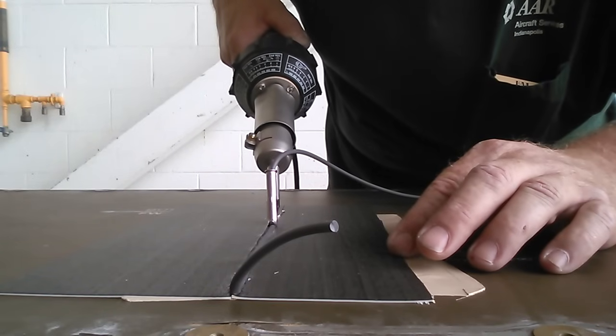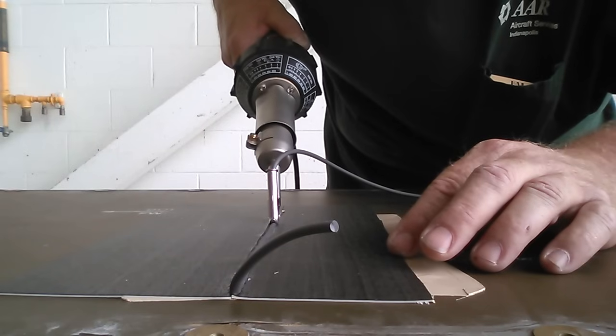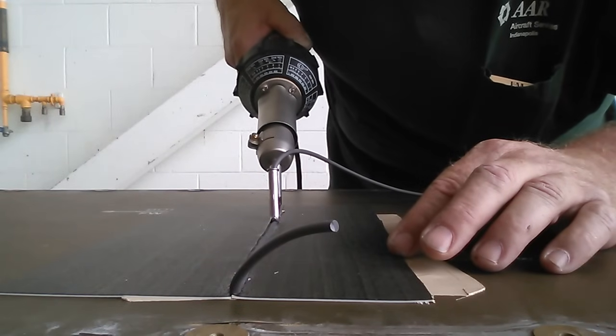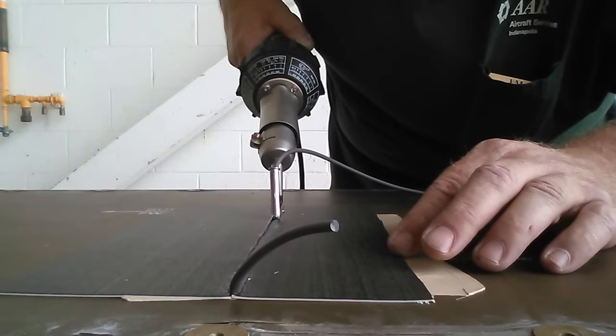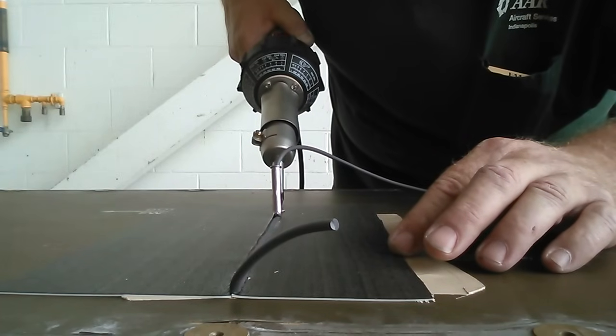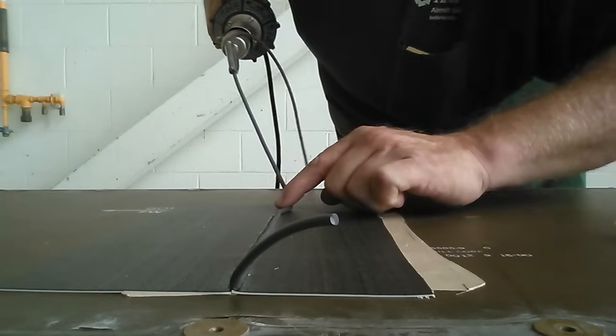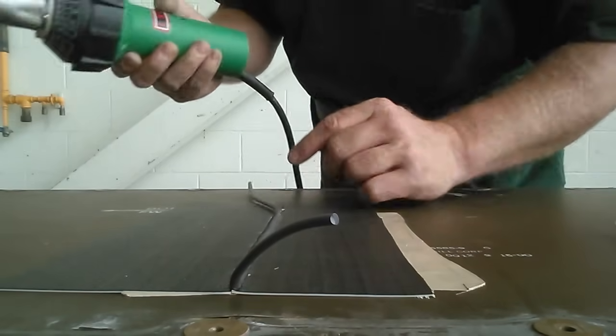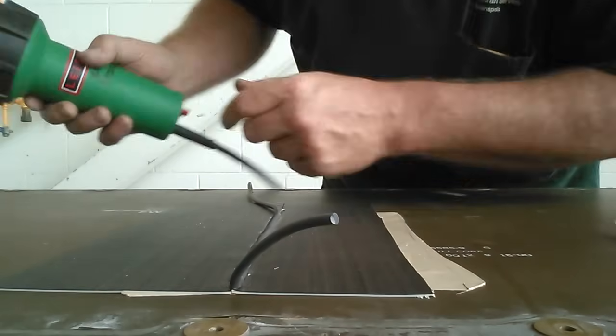When you get to the end or whenever it is you want to stop, especially if you're in an enclosed area, you'll have to start from the other side. When you get to the end just pull the gun up and away and pull the welding rod out of the middle of the gun. Turn your gun to zero and let it cool down.